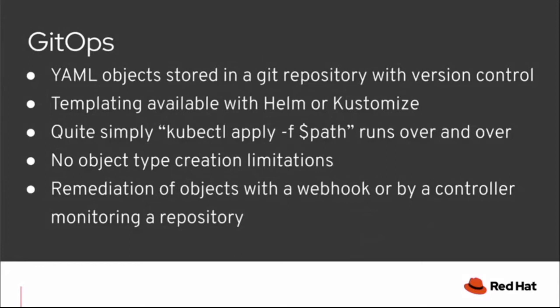Our application manifests for Kubernetes will be stored in Git, and Git will provide version control for our files as well as audit capabilities. We can do templating by using other tools like Helm or Kustomize — more on this later. On the cluster side, it's pretty simple — it's just a controller which runs kubectl apply -f over and over again, so if there is any change it will be applied. There are no object type creation limitations, so as long as the API type exists on the destination cluster it will work.